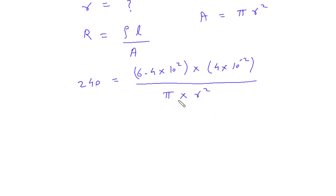From this we can calculate r. R squared equals 6.4 times 10 to the 2. So this will be 6.4 times 10 to the 2, times 4 times 10 to the minus 2, divided by pi times 240.